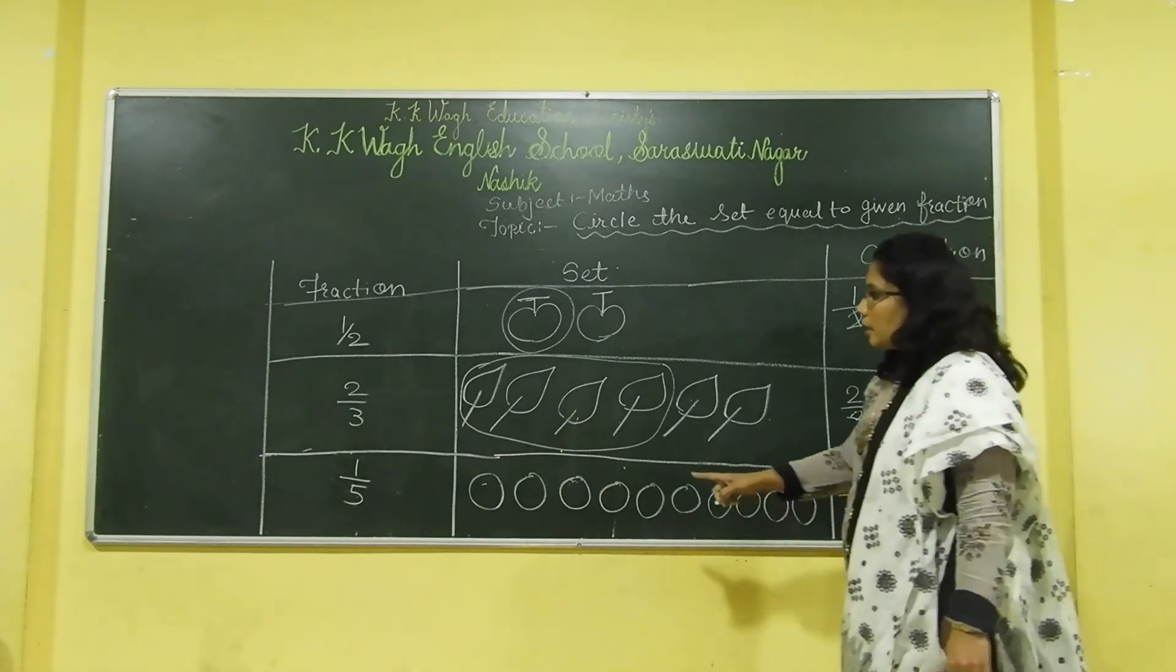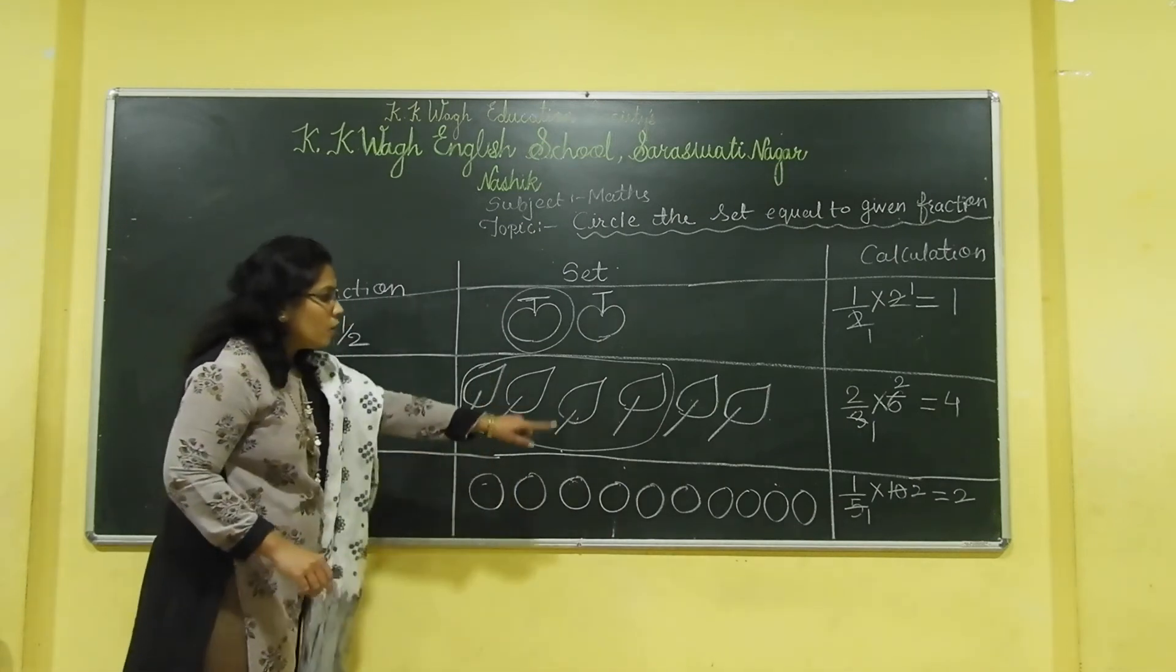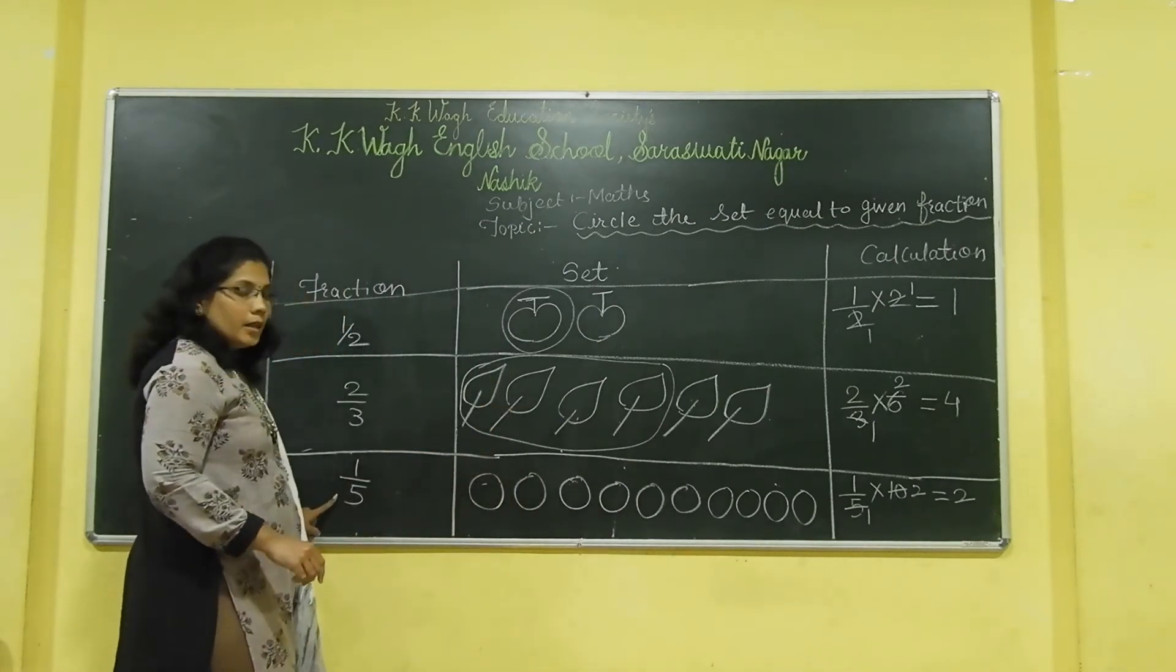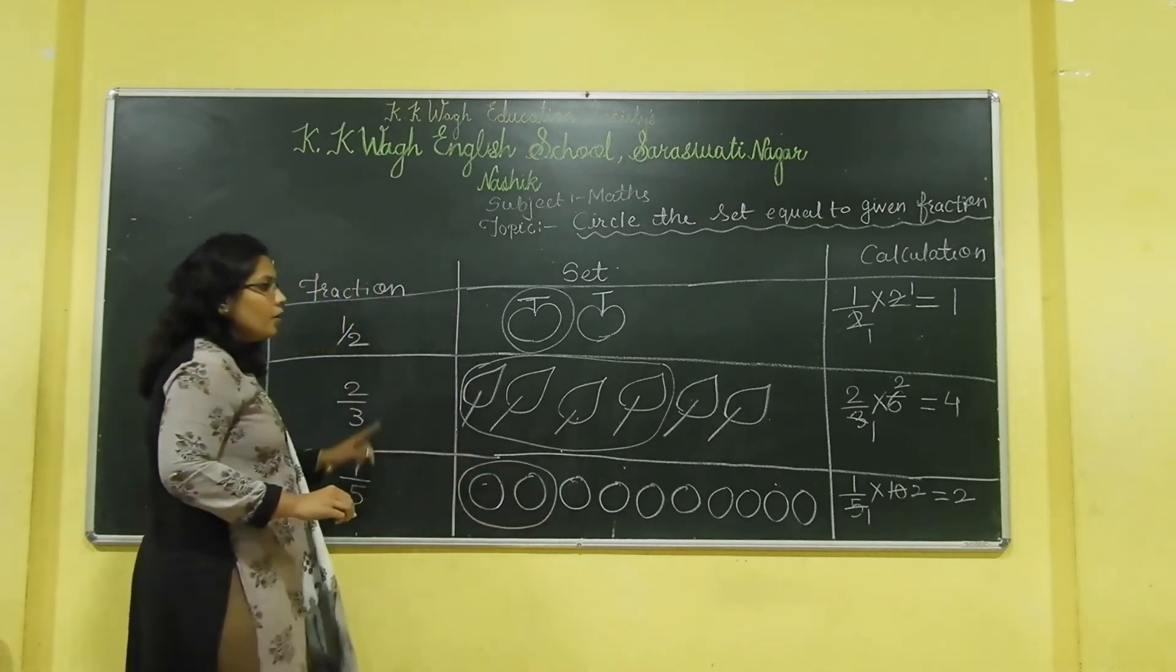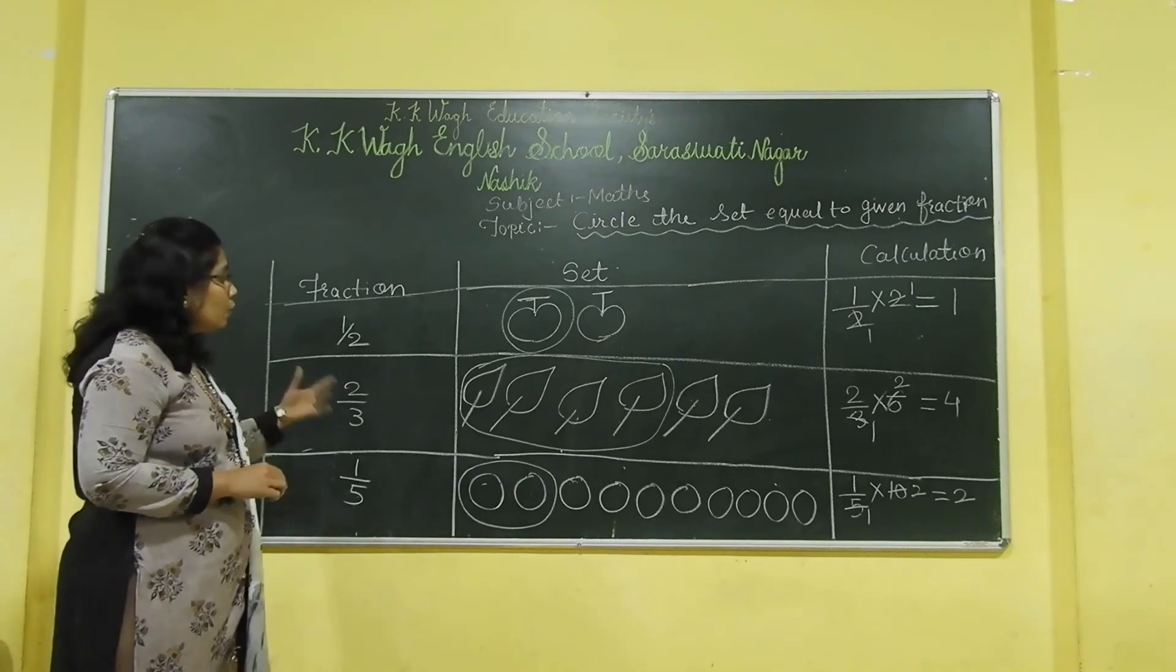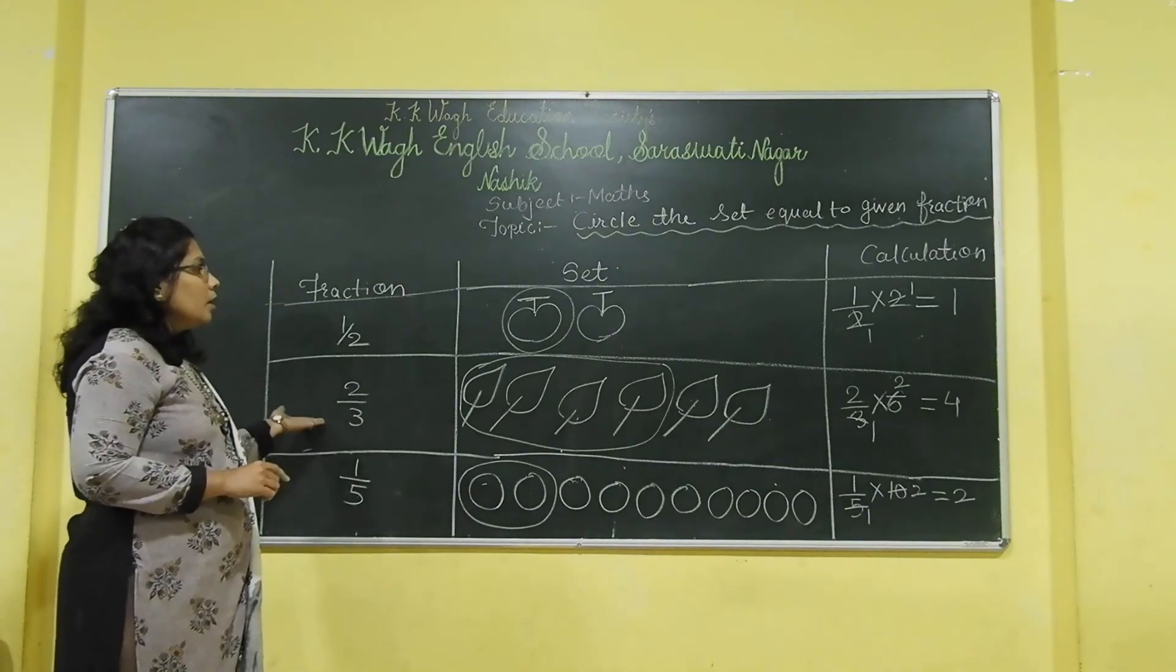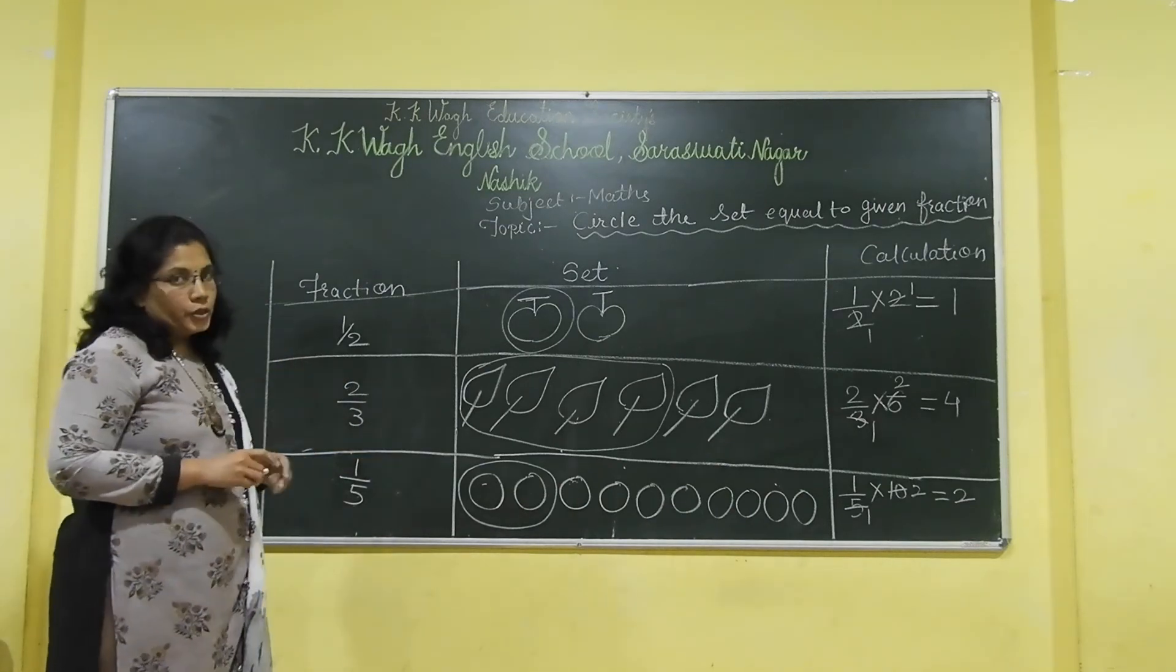And we will circle the 2 balls here. The fraction of this whole set, 1 by 5. We will circle it here like this. Have you understood this now? In this way, we have learnt how to find out the fraction or how to circle the given fraction.